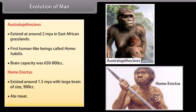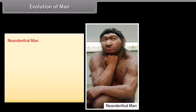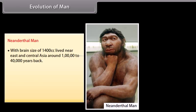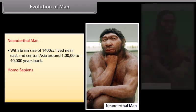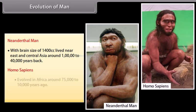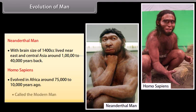Neanderthal man had a brain size of 1,400 cc and lived near East and Central Asia, around 1 lakh to 40,000 years ago. Homo sapiens evolved in Africa around 75,000 to 10,000 years ago and are called the modern man.